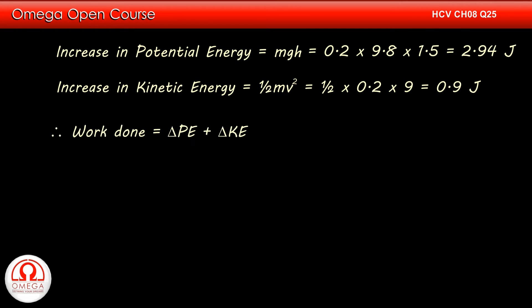Now, the net work done on the stone must be equal to the increase in its kinetic energy plus increase in its potential energy. Thus, work done is equal to 2.94 plus 0.9 or 3.84 J. This is answer to the first part of the question.